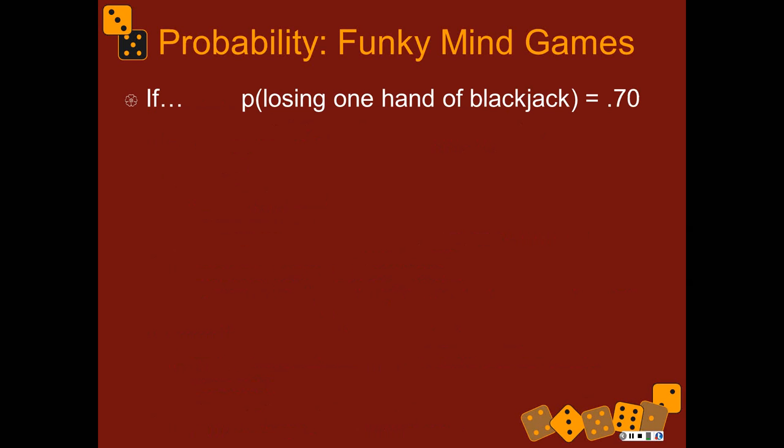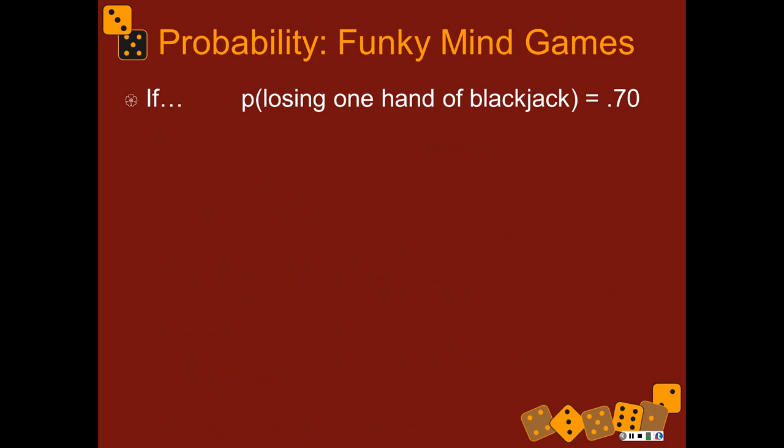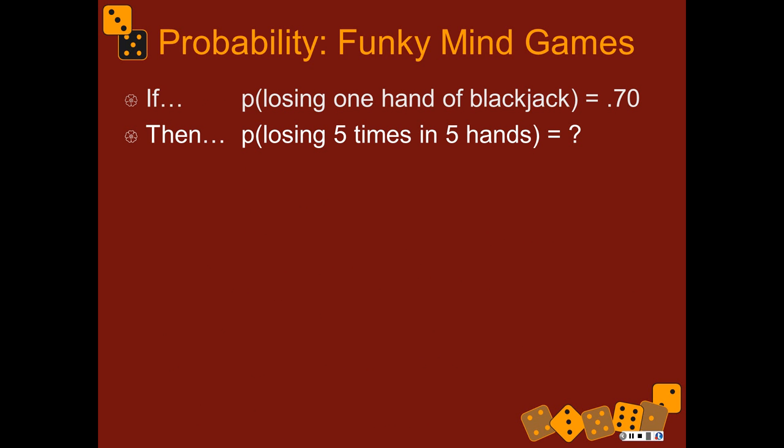This determines your definition of what is a random process or an event. If you change the way you group things together, you have changed the probability P. For example, if the probability of losing one hand of blackjack is 0.7 and we assume it's totally independent, then the probability of losing five times in five hands is 0.70 times 0.70 times 0.70 times 0.70 times 0.70 — that's 0.70 to the fifth power, which is about 0.168. So it's much less likely that you'll lose all five hands.